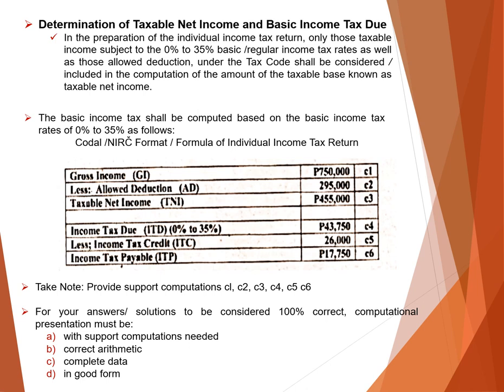For the determination of taxable net income and basic income tax due: you take your gross income, subtract the allowed deductions to get taxable income, then apply the 0 to 35% rate to get the income tax due. From that, you subtract the income tax credit — for example, if you overpaid tax, that can be applied as a credit against your next tax due, or if tax was withheld from you — to arrive at the income tax payable.